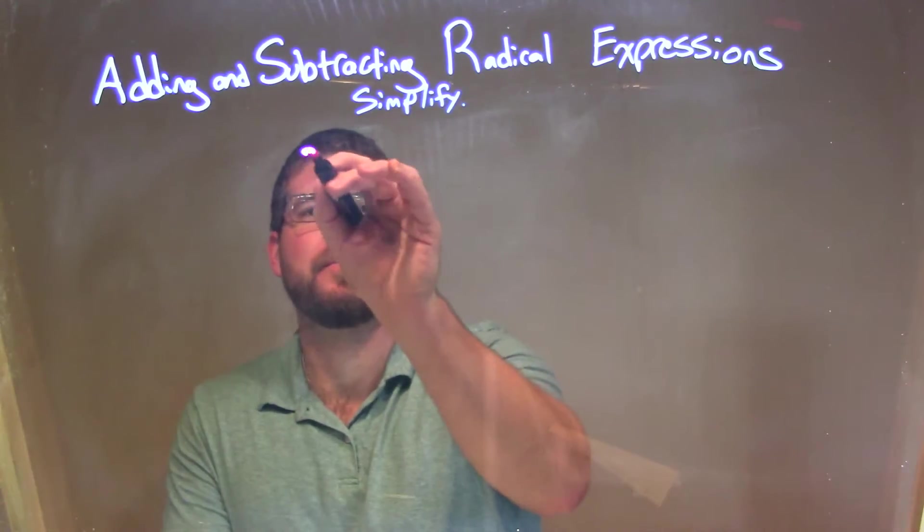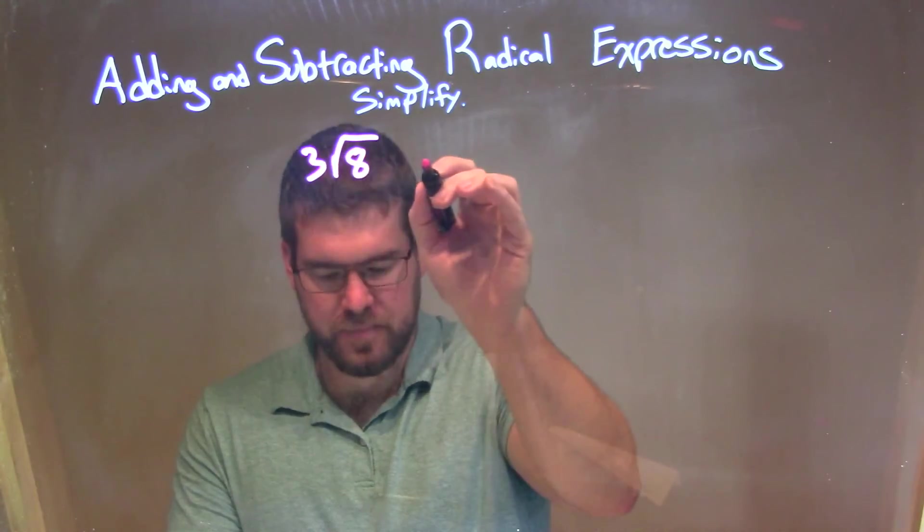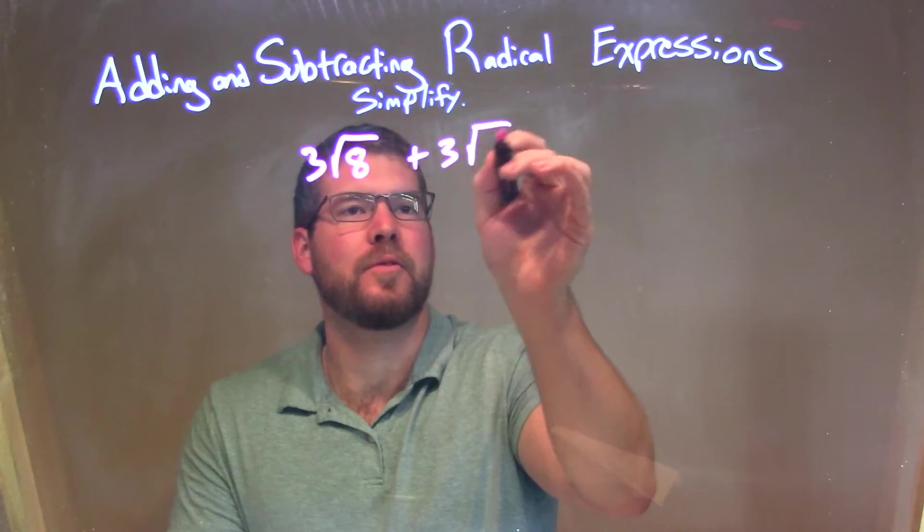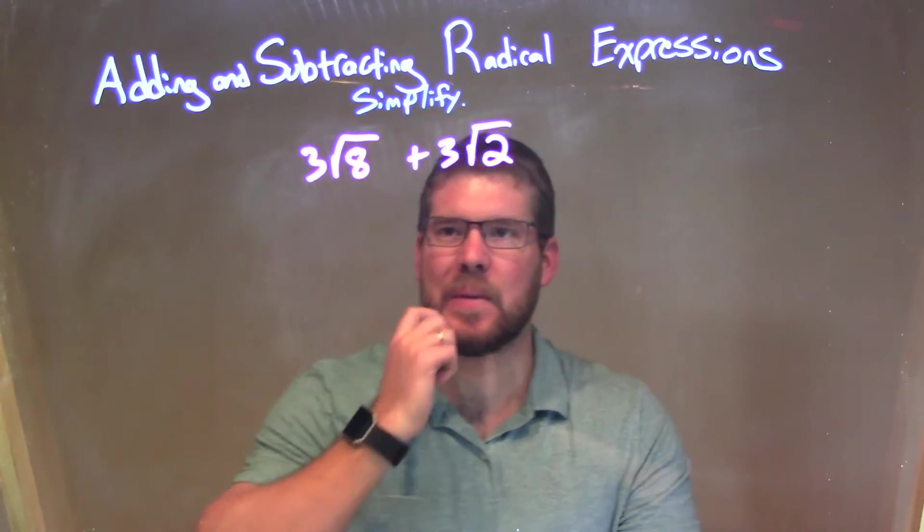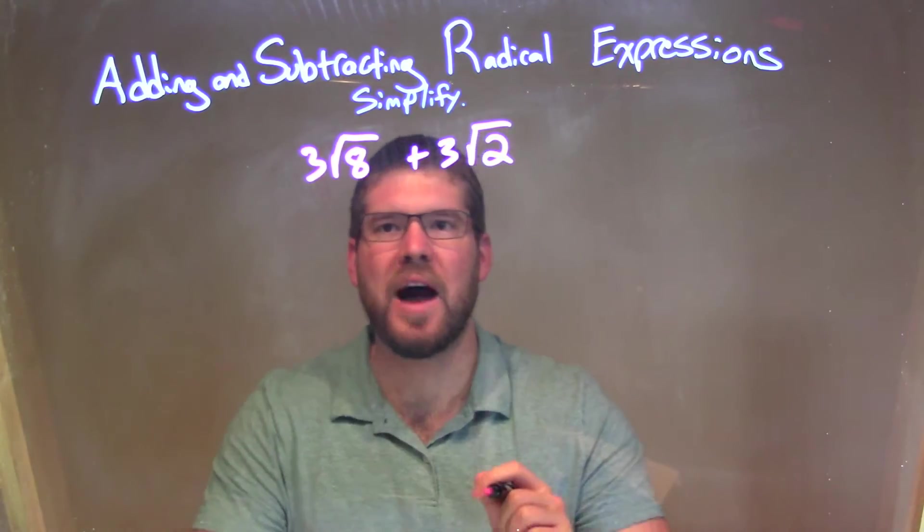So if I was given this expression, 3 square root of 8 plus 3 square root of 2, I want to combine these two, but I can't until they have the same square root value.